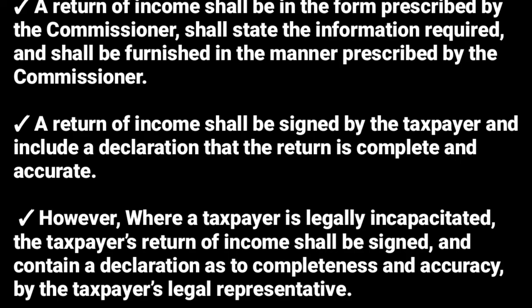A return of income shall be signed by the taxpayer and shall include a declaration that the return is complete and accurate. However, where a taxpayer is legally incapacitated, the taxpayer's return of income shall be signed and contain a declaration as to completeness and accuracy by the taxpayer's legal representative — your representative will sign for you and confirm that everything included is complete and accurate.